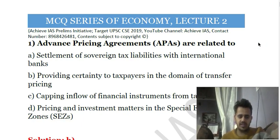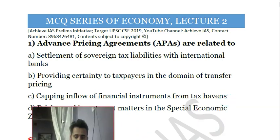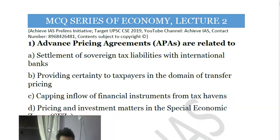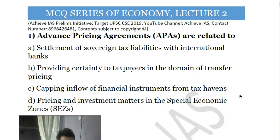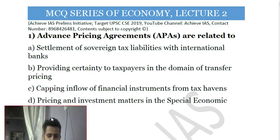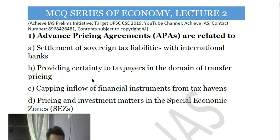First question: Advanced pricing agreements are related to — (a) settlement of sovereign tax liabilities with international banks, (b) providing certainty to taxpayers in the domain of transfer pricing, (c) capping inflow of financial instruments from tax havens, (d) pricing and investment matters in special economic zones. The answer is (b): providing certainty to taxpayers in the domain of transfer pricing.